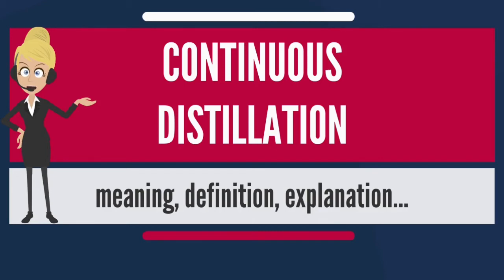In batch distillation, the remaining bottoms fraction is removed at the end. Because each of the distillate fractions are taken out at different times, only one distillate exit point is needed, and the distillate can just be switched to a different receiver — a fraction collecting container. Batch distillation is often used when smaller quantities are distilled.